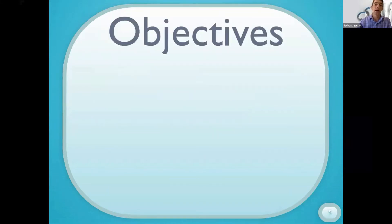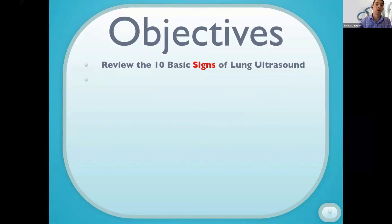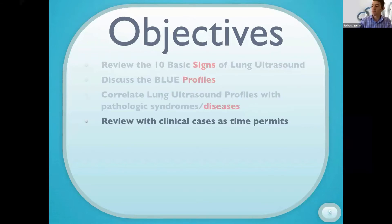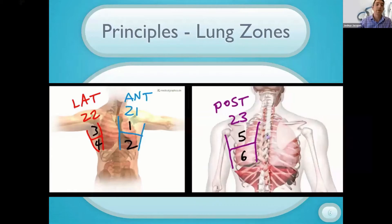Today we're going to start with reviewing the 10 basic signs of lung ultrasound. Then we'll look at the profiles of lung ultrasound in the BLUE protocol, and then try to correlate those lung ultrasound profiles with specific pathologic syndromes and diseases, and review with some cases if there's time. I'm going to skip most of the background and the how-tos, as the people teaching at the stations today should cover a lot of that.